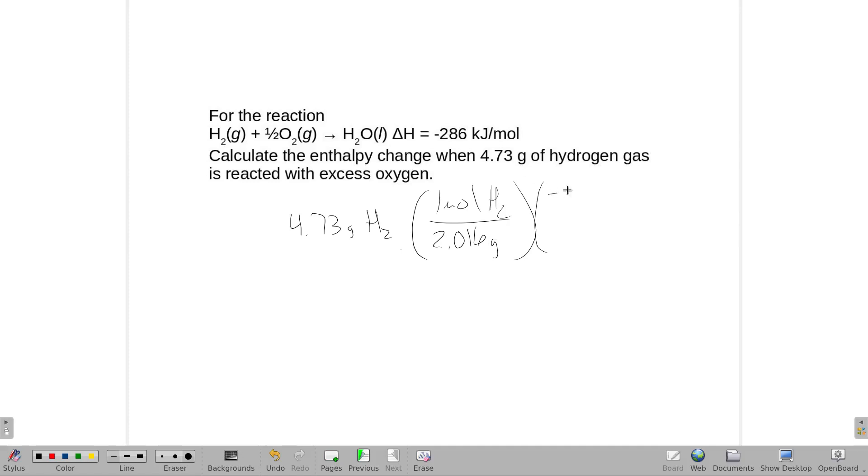What we're going to do is take that value there, negative 286 kilojoules, and our moles are just whatever was listed in the balanced equation. So since it was a mole of hydrogen, we're going to put a mole of hydrogen on the bottom.